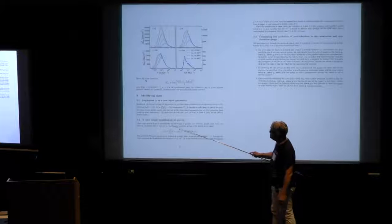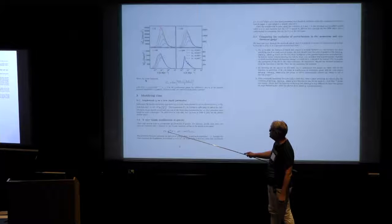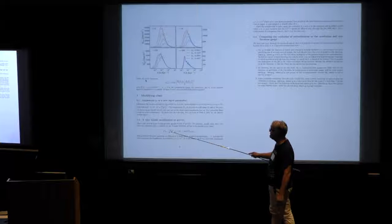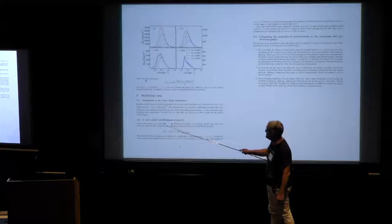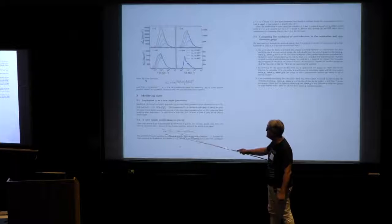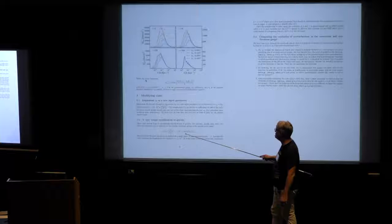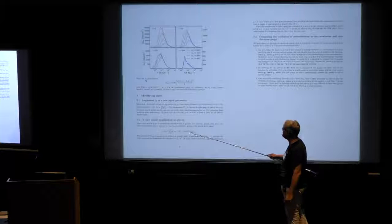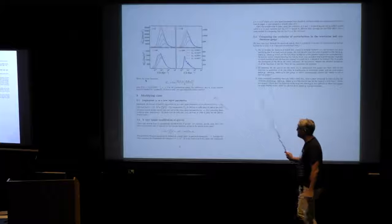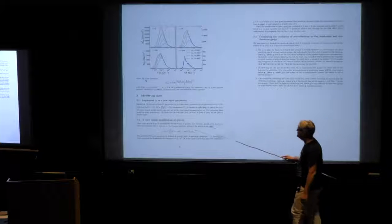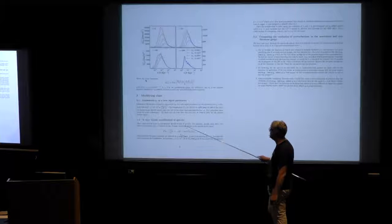...and this is an Einstein equation in the synchronous gauge with the two variables, eta and h. So normally, this Einstein equation looks like this combination is equal to minus 4 pi G a square, rho total, delta total. And I could modify gravity by putting here an arbitrary function of k and tau.